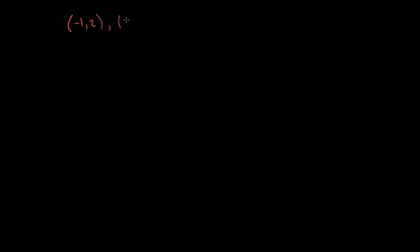So let's imagine we have a couple of points that define a segment. Let's say they're the points negative 1, 2 and 3, 4. My goal to start off with is to find the point right in the middle between the two of them. This is called the midpoint — it divides the segment into congruent segments.